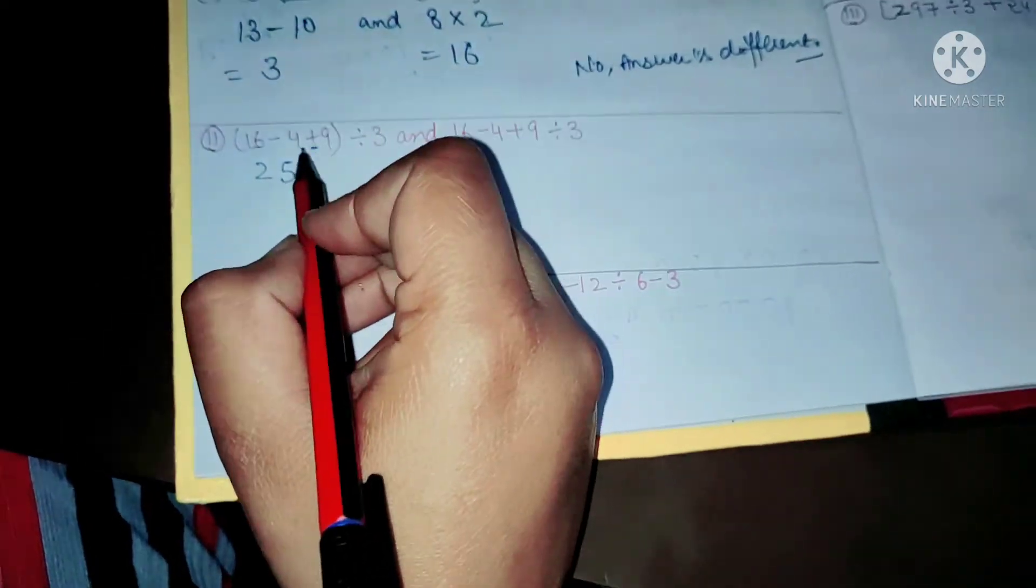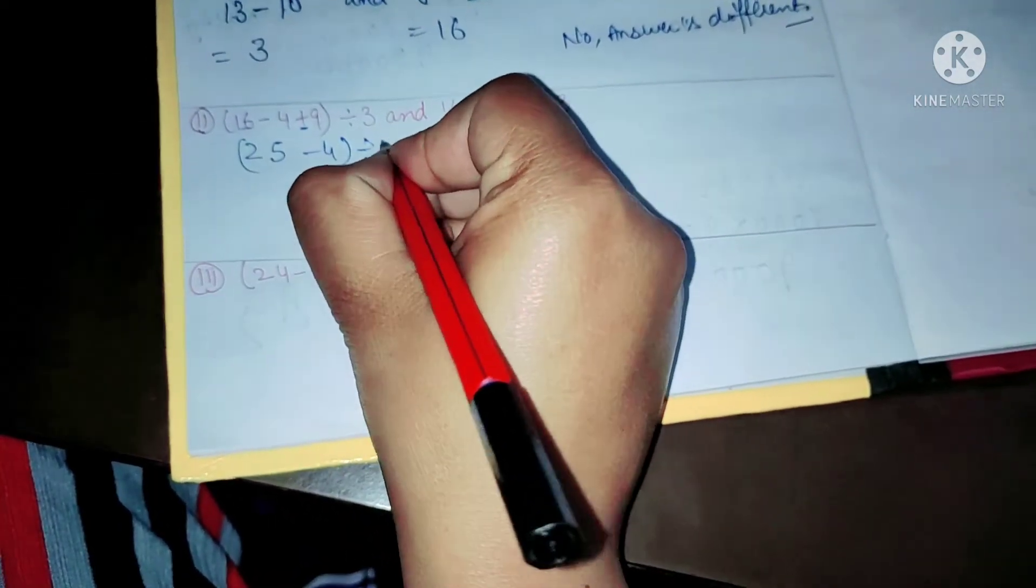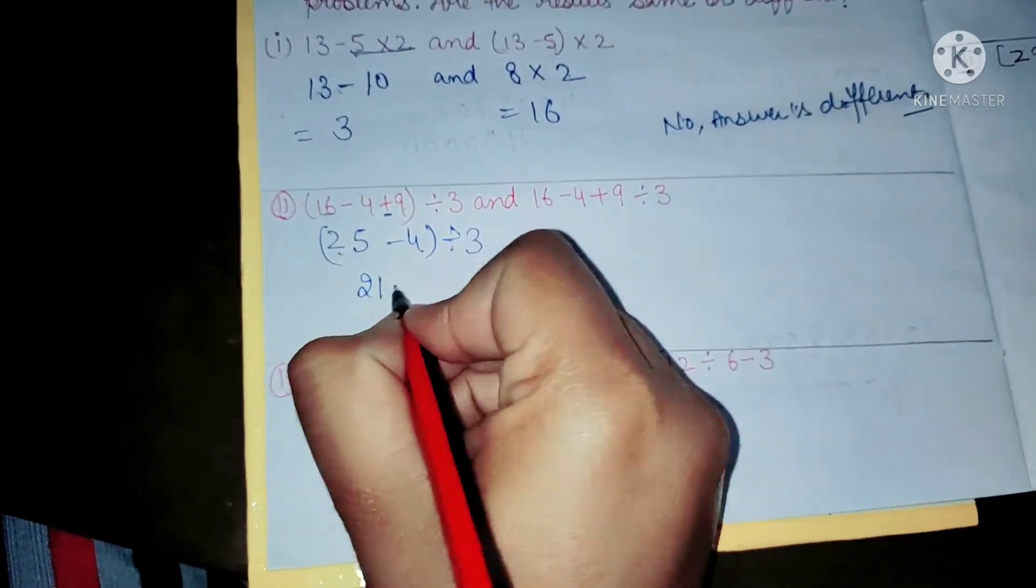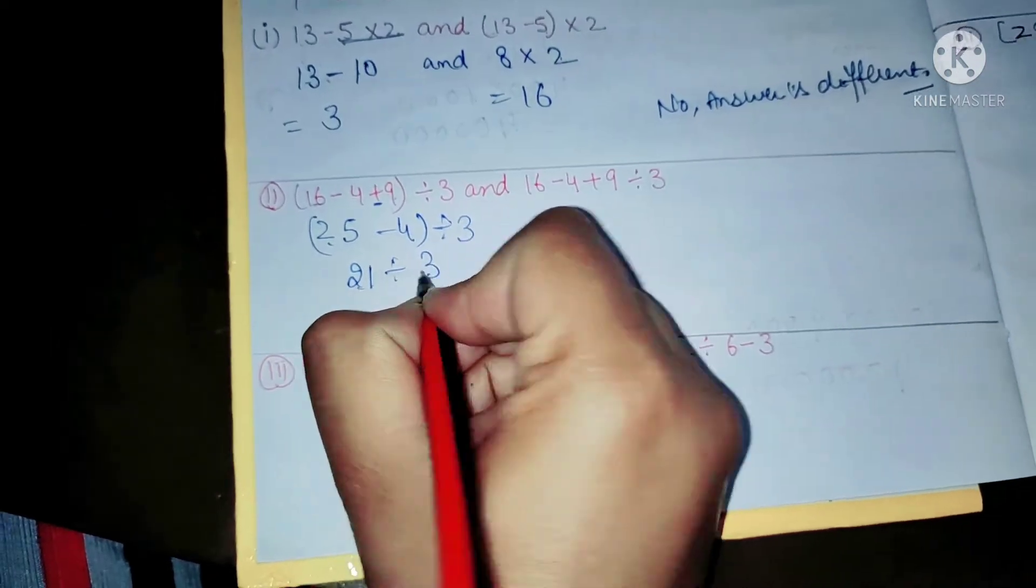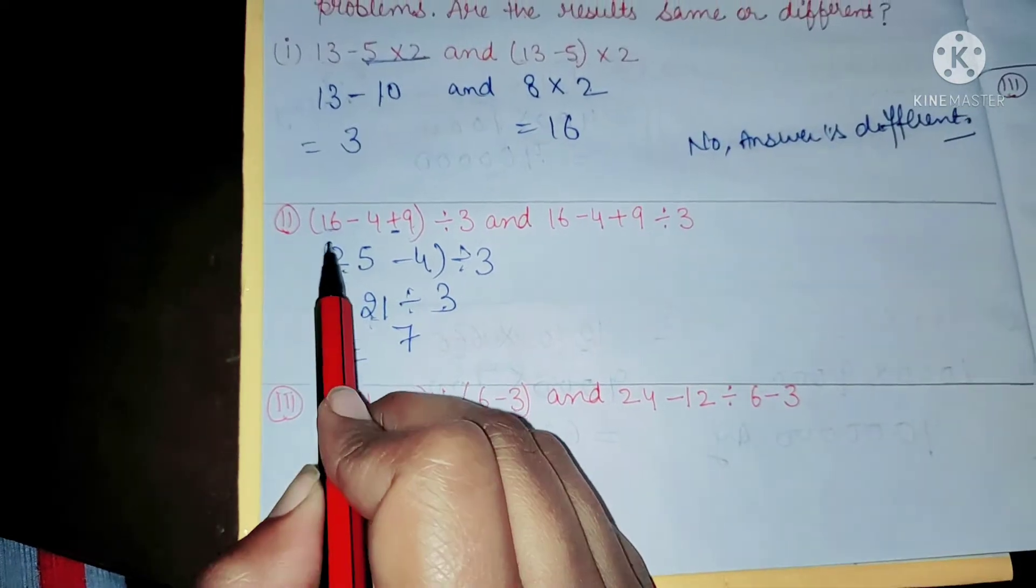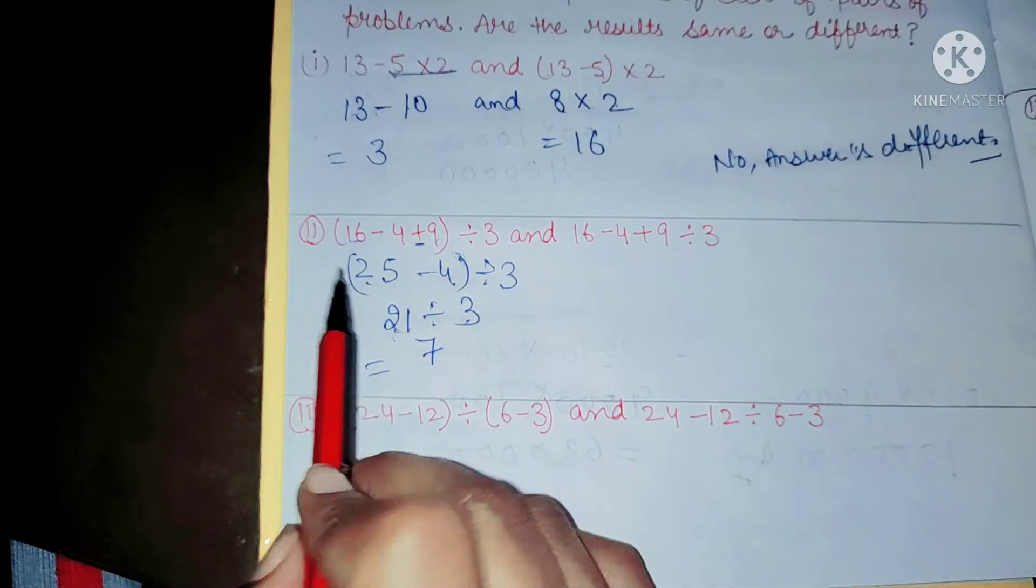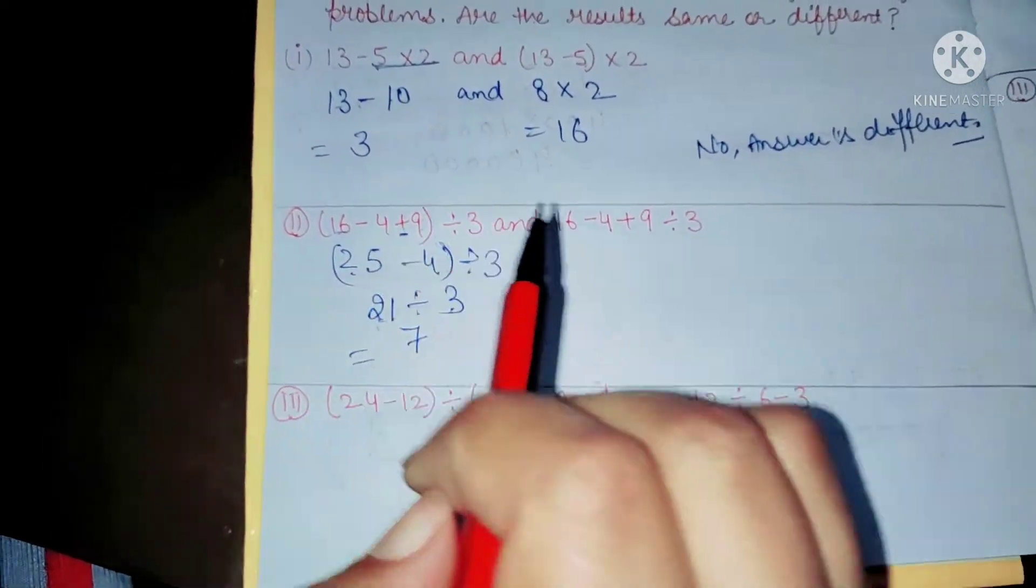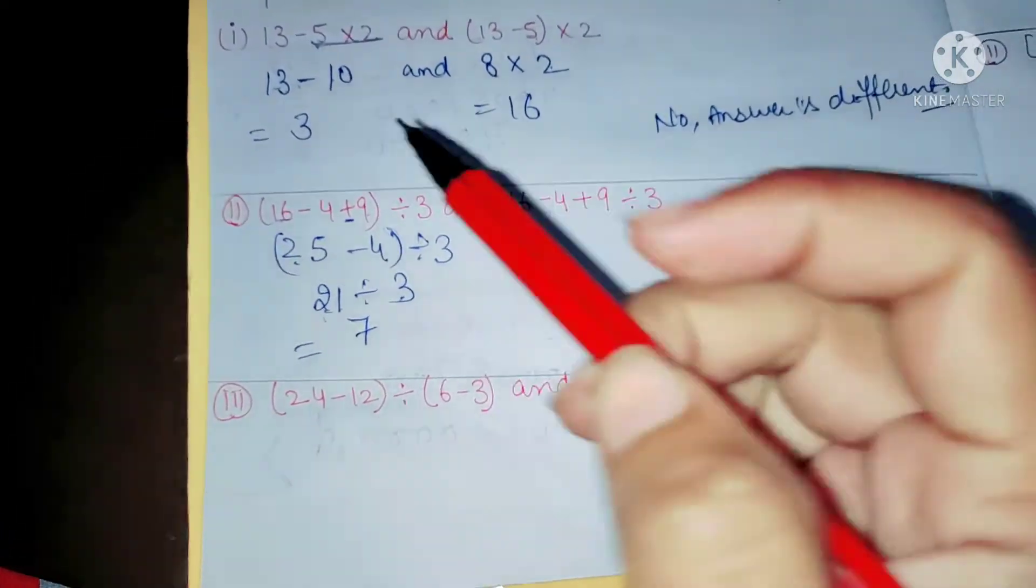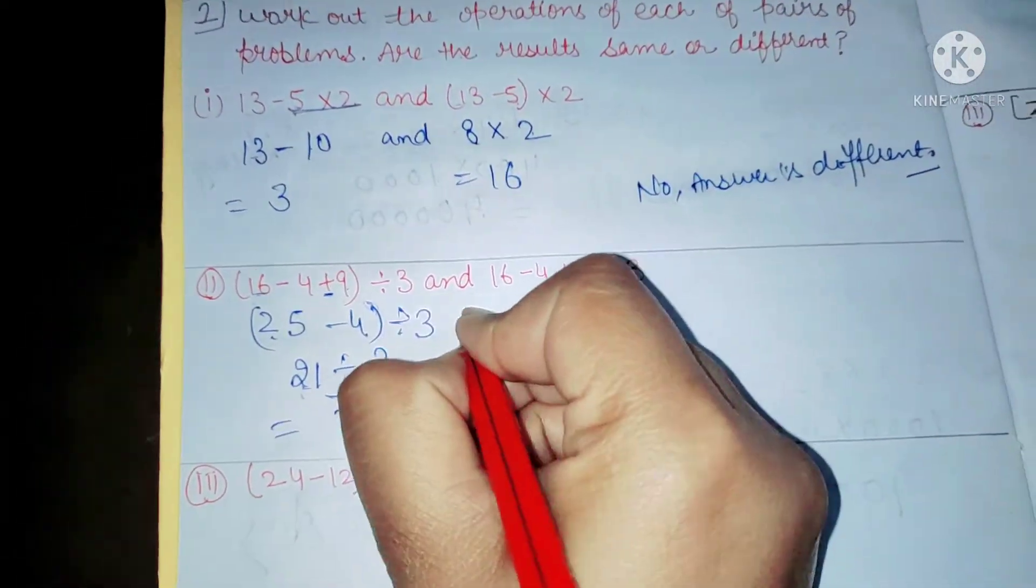25 minus 4 divided by 3. That's 25 minus... 21 divided by 3 equals 7. Here, because it is in brackets, we have to finish all the operations in the bracket. Operations means plus, minus, multiply, divide. If the bracket contains a lot of operations, then we have to solve them first.